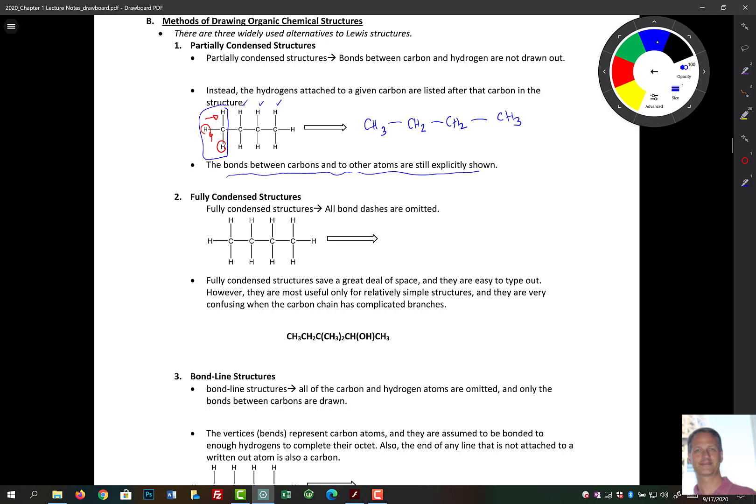And then what we can do is we can condense this even further into something called the fully condensed structure. Now, the fully condensed structure is all bonds and lines are omitted. So this structure here is the same thing as we wrote up above, but now we're going to lose these three bonds. So it simply would be CH3, CH2, CH2, and CH3.